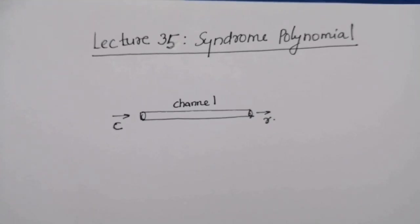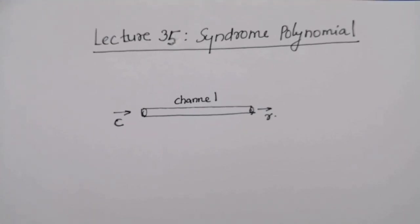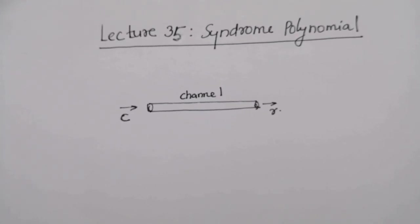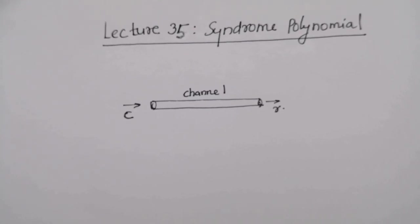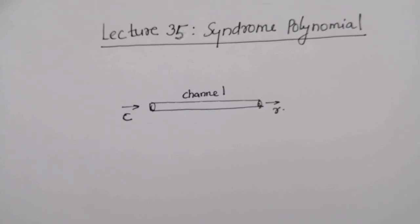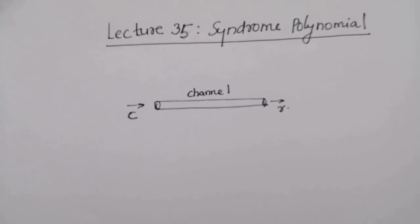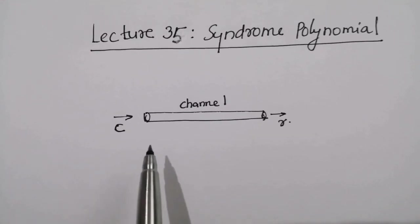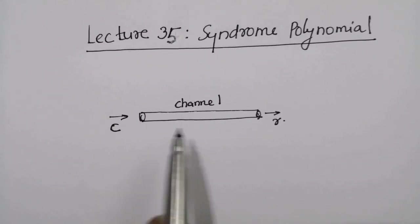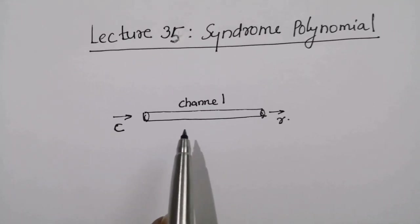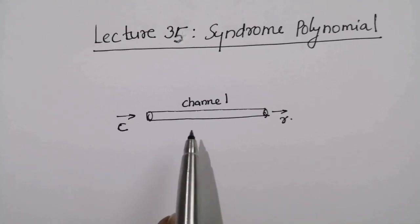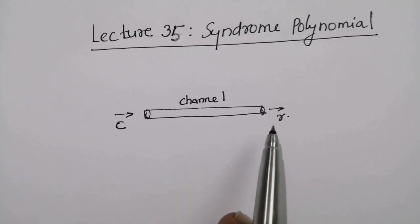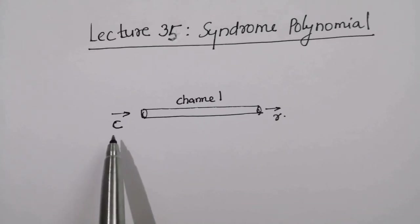Hello everyone. In the last class we discussed the steps involved in construction of generator matrix and parity check matrix for a cyclic code. Today we will discuss about the syndrome polynomial. When a code word c is transmitted over a noisy channel, errors are likely to get introduced due to channel noise, and thus the received vector r is different from the transmitted code word c.